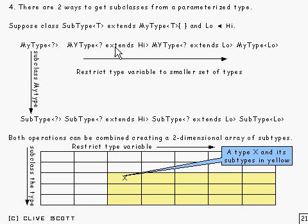If we restrict it a bit so that it extends Hi, then we've made a subtype. If we restrict it still further to say it extends Lo, we've made it a smaller set, so we've got a subtype again.